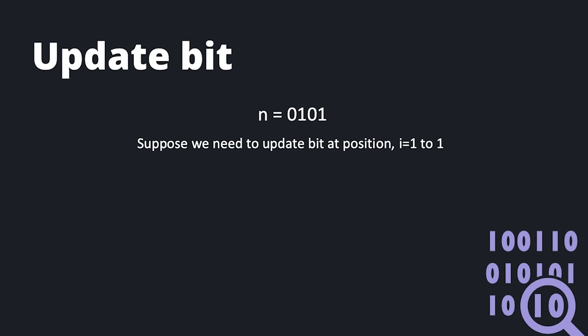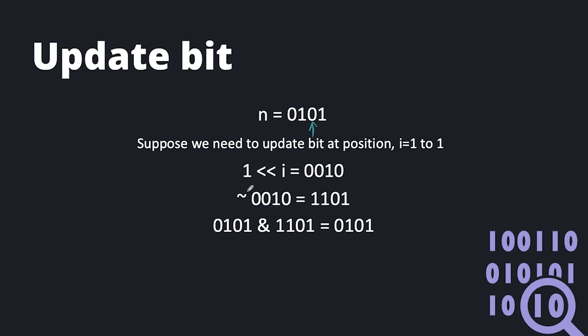Next is update bit, the last of the 4 basic concepts. In update bit, we are given a number and a position, and we need to update that position with a given value. First, we clear the bit at that position using the clear bit procedure — making a mask, taking 1's complement, and ANDing with the original number. After clearing, we then set our bit at that position using the set bit procedure. So update bit is nothing but clear bit followed by set bit.